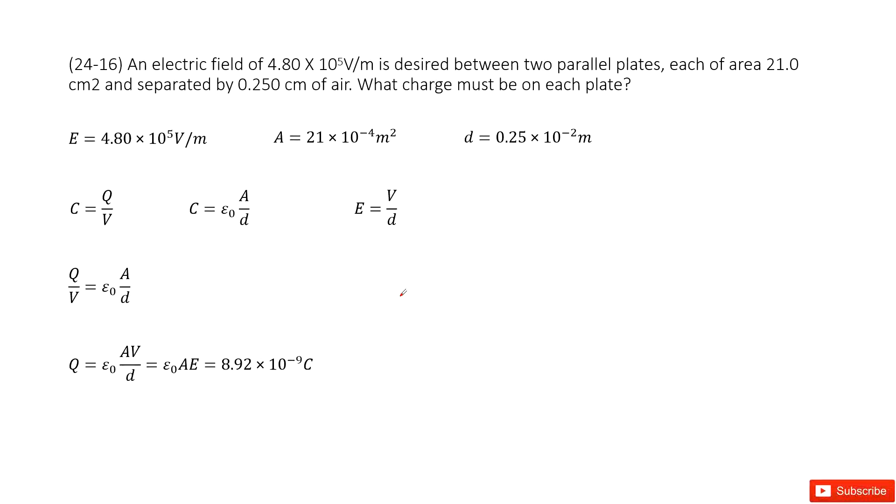Here you can see we have a conductor composed of two parallel plates. The electric field is given. We write it there. This is the electric field between two parallel plates. The area for each plate is given and the gap between the two plates is also given, separated by air.